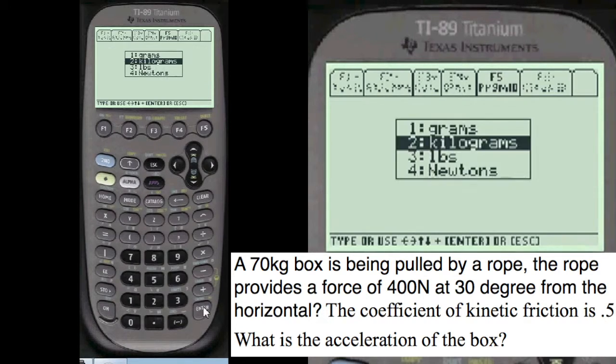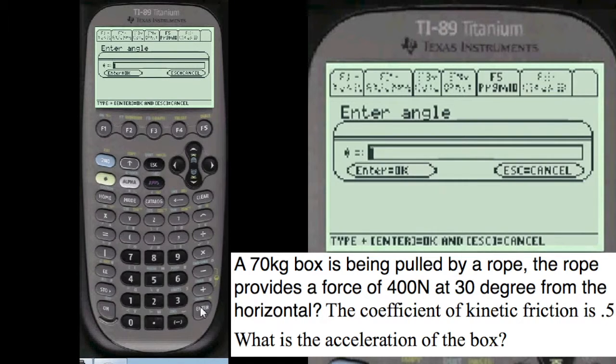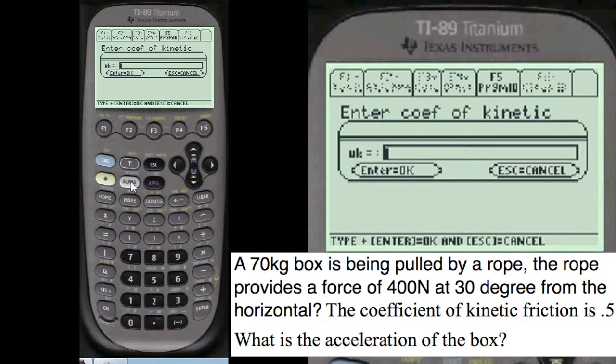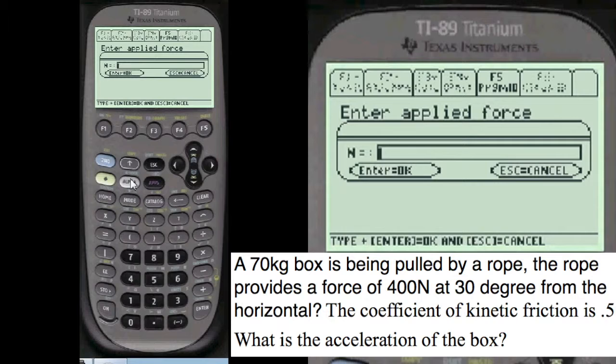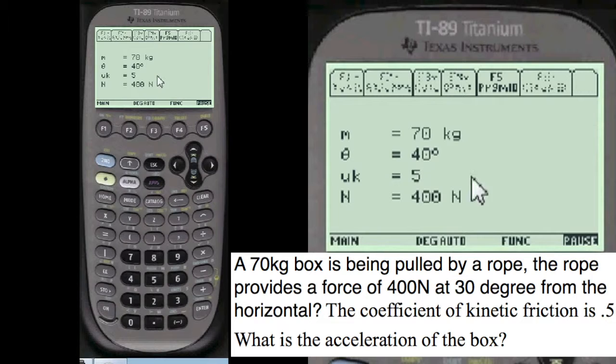We're going to enter the mass. You have to press alpha before you enter anything into these entry lines here. So we're going to go alpha, 70. They might give you the grams or pounds or newtons or whatever. This is given in kilograms. Otherwise I do the conversions for you. Enter the angle is alpha, 40 degrees. Coefficient of kinetic friction is alpha, 0.05. And the applied force is alpha, 400 newtons.